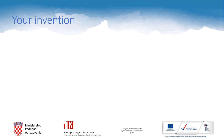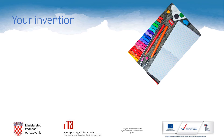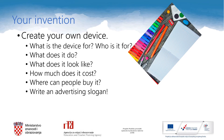The second part of our lesson is a creative one. You will create your own device, and I will help you do it by giving you some guidelines. Let's take a look at the questions: What is the device for and who is it for? What does it do? What does it look like? How much does it cost? Where can people buy it? And finally, you will write an advertising slogan.